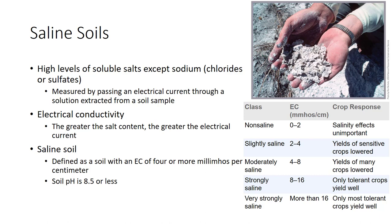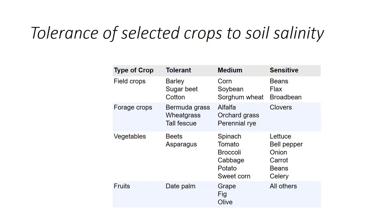Most salts are chlorides or sulfates. Soil pH is 8.5 or less. A white crust may be seen on the soil surface due to salts migrating to the surface by capillary rise. This is also commonly observed on the soil surface in potted plants. Soils can be classified for use based on salinity. The bottom table shows the classification system of salinity and how it affects the crop. This table classifies common crops according to their salt tolerance. Crops such as beans, lettuce, peppers, and carrots are more sensitive.